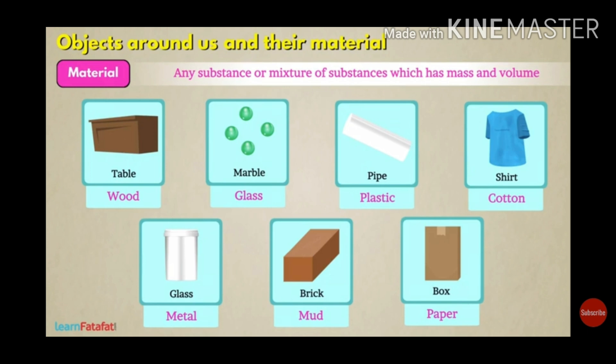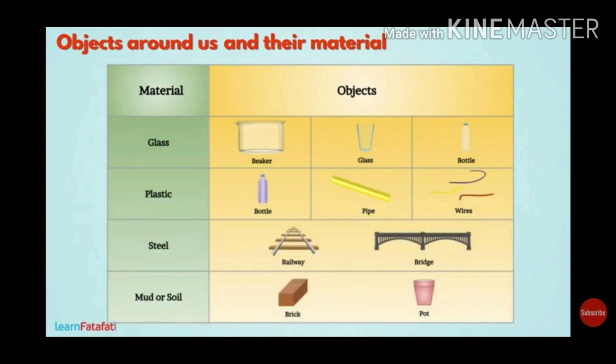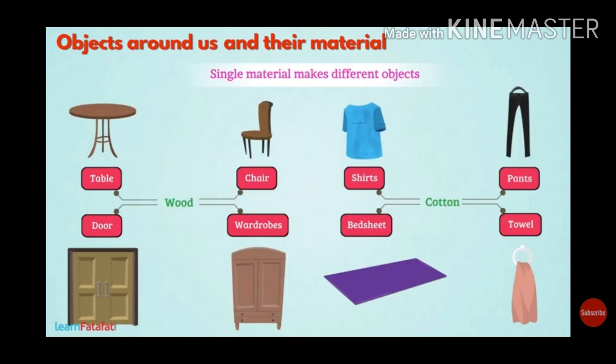A table is made up of wood, marble is made up of glass, and a pipe is made up of plastic. A brick is made up of mud, books and notebooks are made up of paper, and a shirt is made up of cotton. Can you think of any other fabric used to make a shirt? Have you ever tried to find out what material is used to make your school uniform?